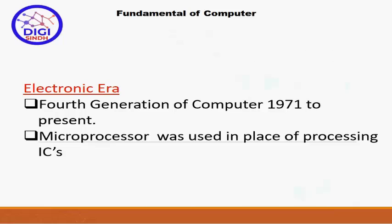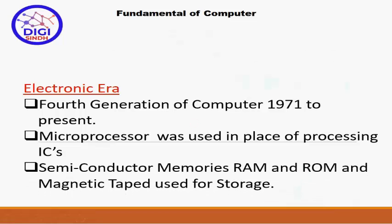Microprocessor وہ ساری ICs جو processing کا کام کرتی تھیں انہیں یک جا کر کے ایک device بنایا گیا جسے microprocessor کہتے ہیں۔ یہ microprocessor اور memories سب semi-conductor devices سے بنائی جاتی ہیں۔ Fourth generation of the computers میں notable memories ہیں RAM یعنی Random Access Memory اور ROM یعنی Read Only Memory۔ Magnetic tape بھی storage کے طور پر use ہوئی۔